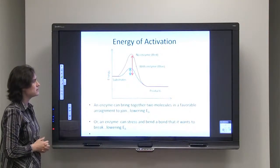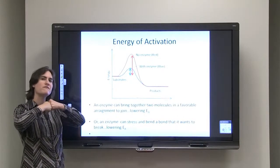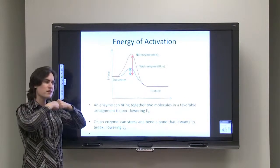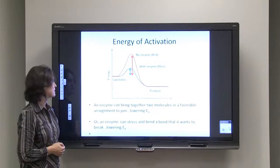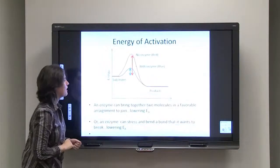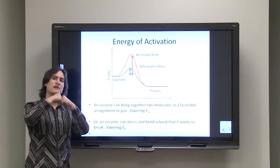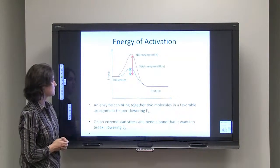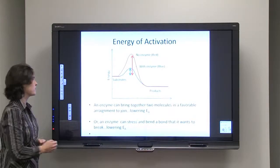An enzyme can bring together two molecules in a very favorable arrangement so that they can be joined together, and that lowers their energy of activation. Likewise, an enzyme can stress or bend a bond, which allows that bond to break and the molecule to be split apart much more easily. Either way, we can lower the energy of activation by using the enzyme.